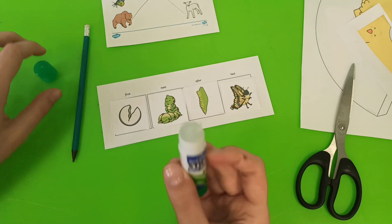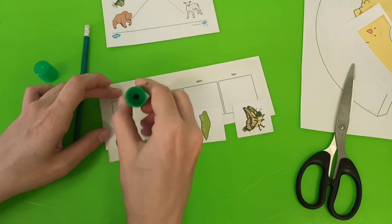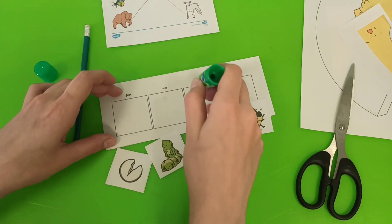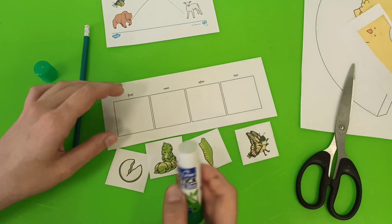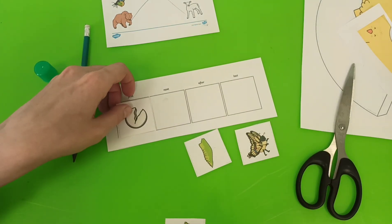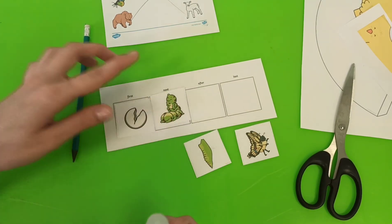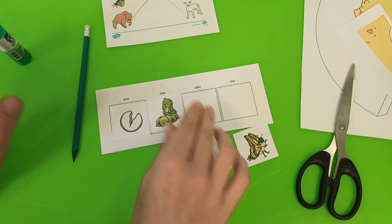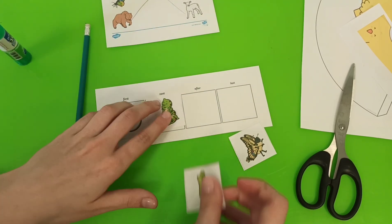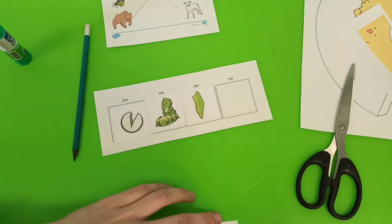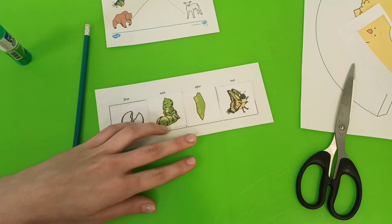Do you remember the story, Cody the caterpillar? So let's glue it. First, egg. Next, caterpillar. After, chrysalis. And last is butterfly.